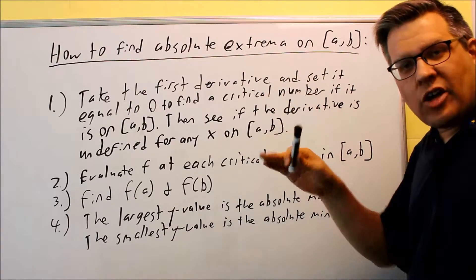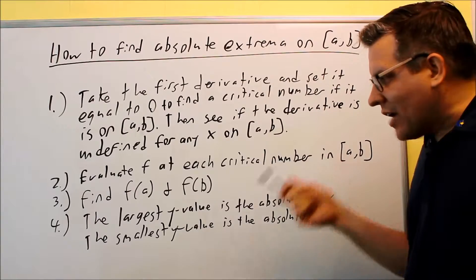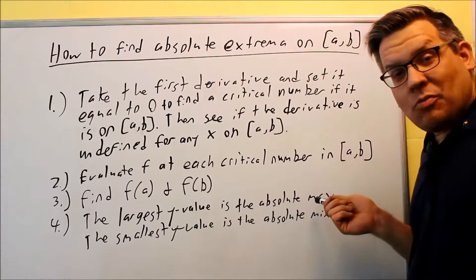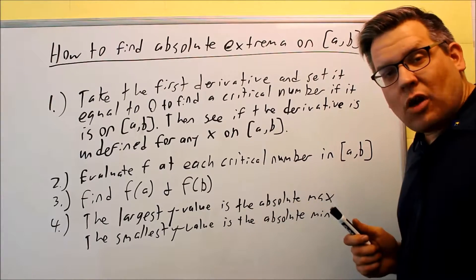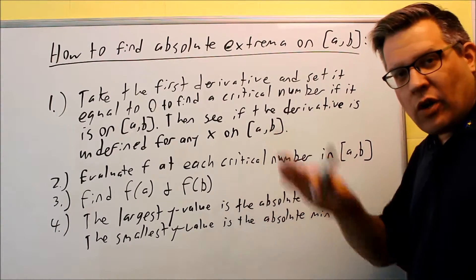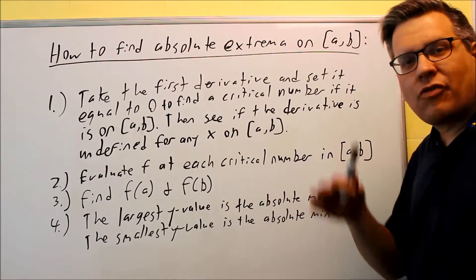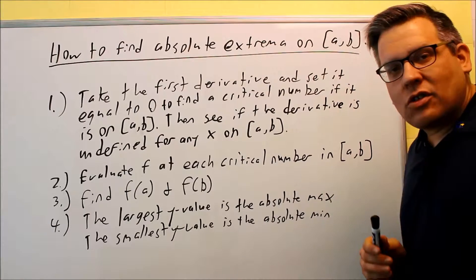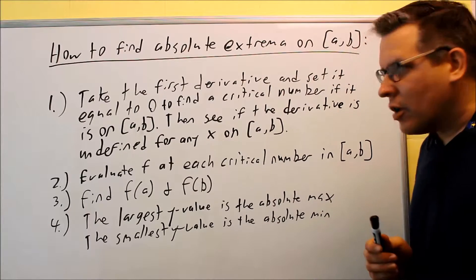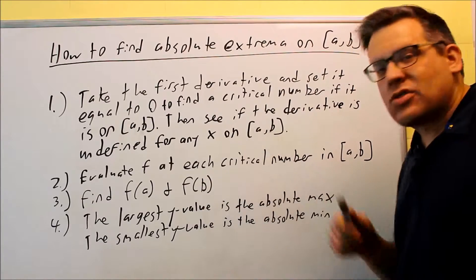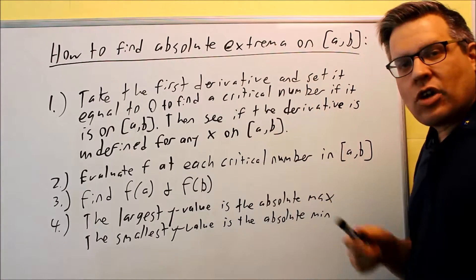Once we have all those values, we see them all on the table. The last thing is you just look at the largest y value means you'll have an absolute max, and if you have the smallest y value, that's going to be absolute min. We're not doing relative max and min here, so you might find relative max and mins in between there, but it's only going to be asking to find absolute extrema. That's why you're doing that step number four.